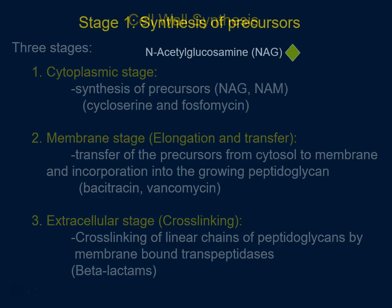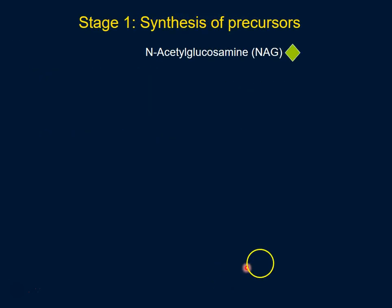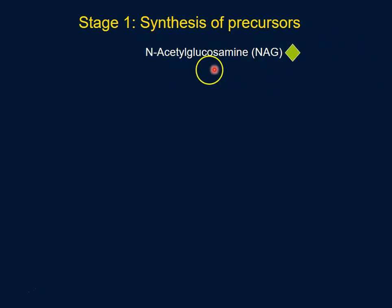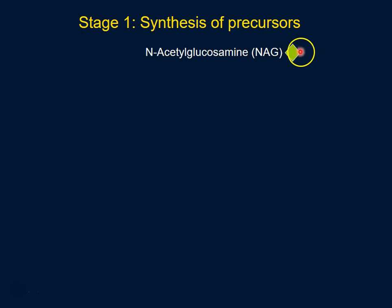Let's start with stage one — this is where we build the building blocks themselves, the glycans NAG and NAM. In this stage, the first glycan, NAG or N-acetylglucosamine, is being made, and it's made from glucose by multiple steps.